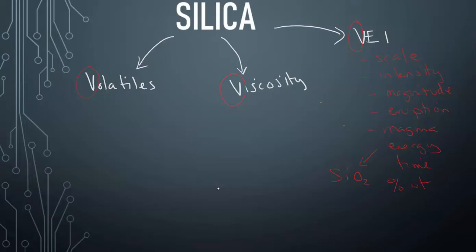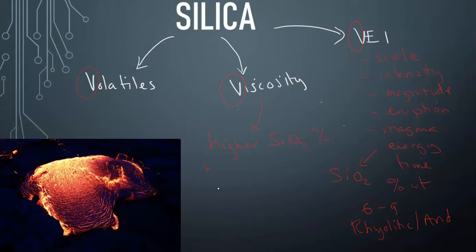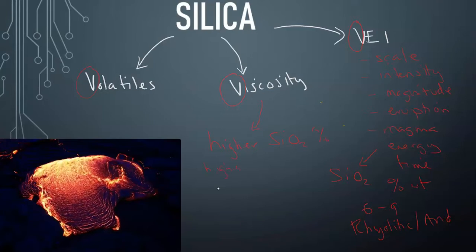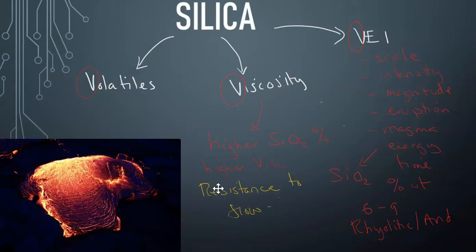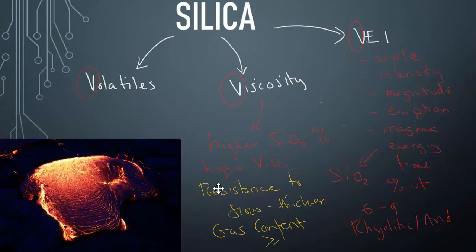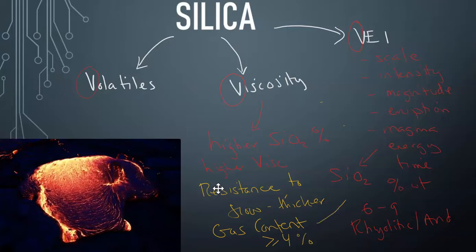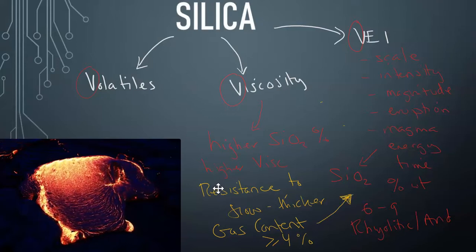The larger VEI, the larger ones between six to nine on the scale, are going to be more rhyolitic and dacitic magma, which goes in the higher range or high echelon of silica composition. Viscosity, that would be the higher the silica percent, the higher the viscosity. And that is the resistance to flow. That makes it thicker. The thicker it is, the more gas content. So up to including 4% will be contained within this magma, therefore resulting in a more explosive, larger VEI eruption.